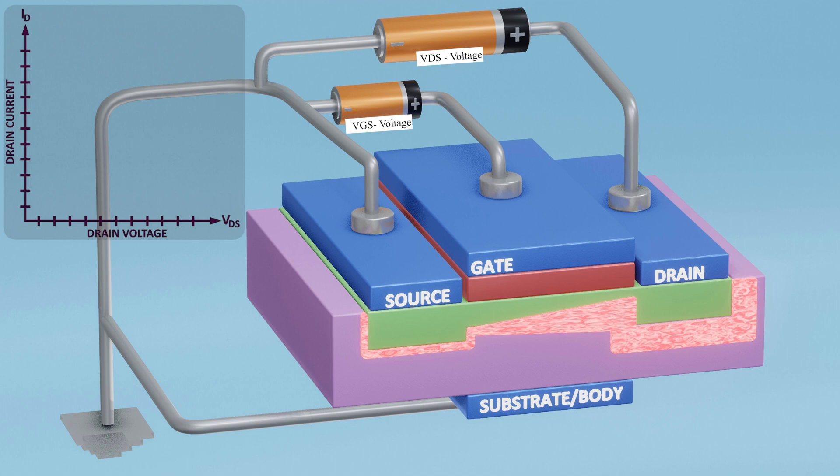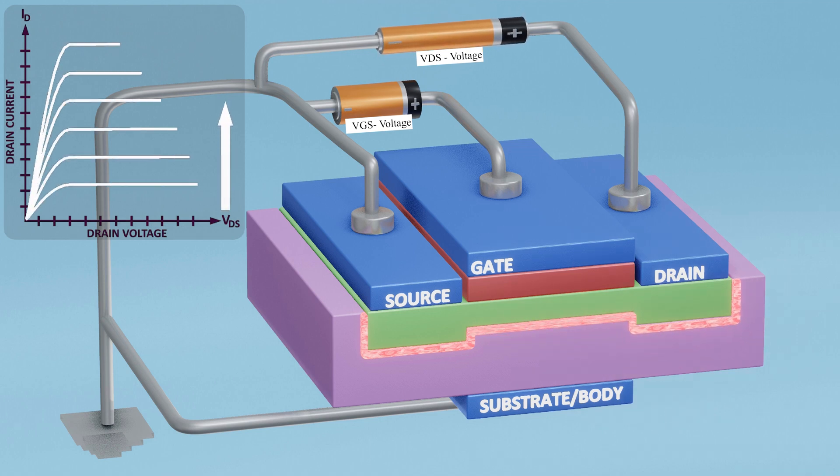To further increase the current in the MOSFET, the gate voltage can be increased, which increases the width of the channel and, consequently, the current flow.